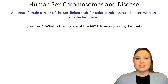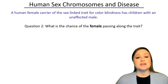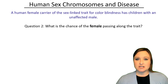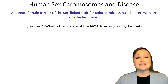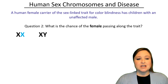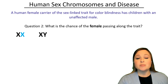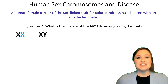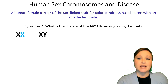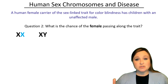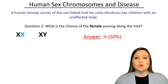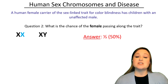Here's question two — same scenario. A female carrier of the sex-linked trait for colorblindness has children with an unaffected male. What is the chance of the female passing along the trait? The female is a carrier, so she has one X chromosome with the normal vision gene and one X chromosome with the trait for colorblindness. She doesn't have the disease herself because the normal X compensates for the X with the colorblindness trait. She has two X chromosomes, so either the normal X or the X chromosome with the colorblindness trait can be passed along. That's one out of two, or 50% — so there's a 50% chance of passing along the trait for colorblindness.